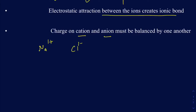Now, how do I know the charge on sodium is 1+ and the charge on chlorine is 1−? We'll talk about that in a minute. But right now, since I have a 1+ on the cation and a 1− on the anion, I can take one sodium and one Cl⁻ to balance out their charges. So when you put this cation and anion together, it's just going to be NaCl.